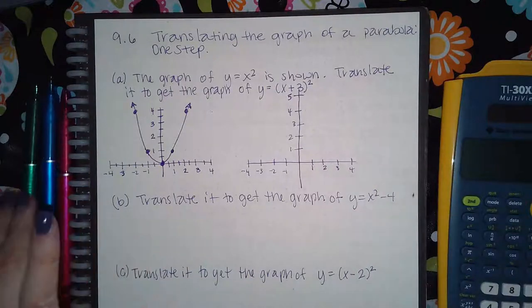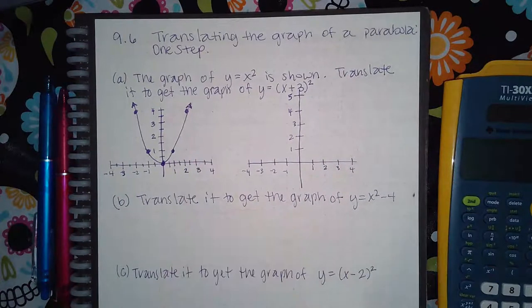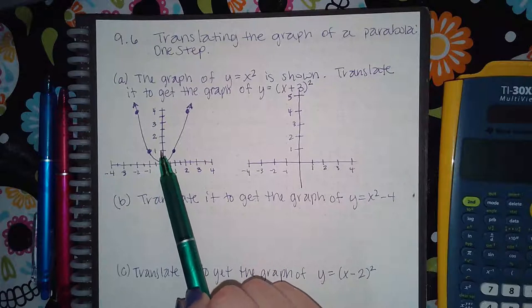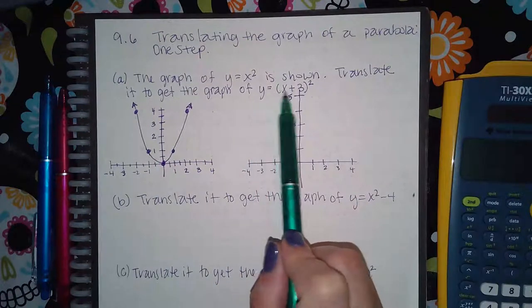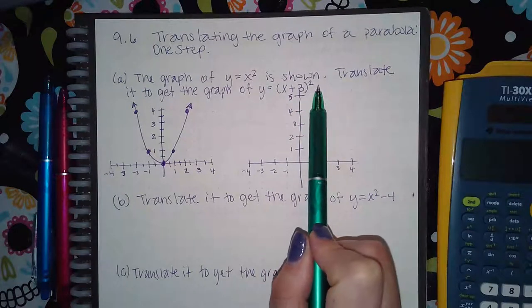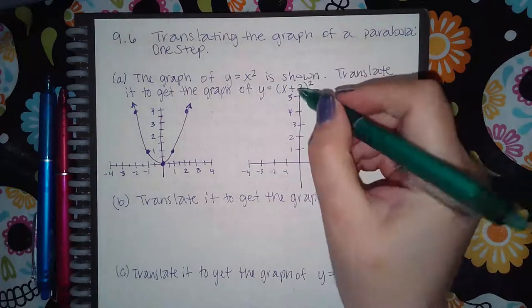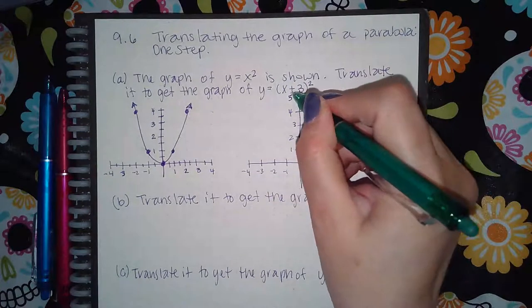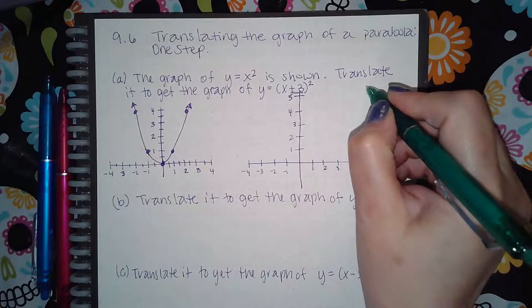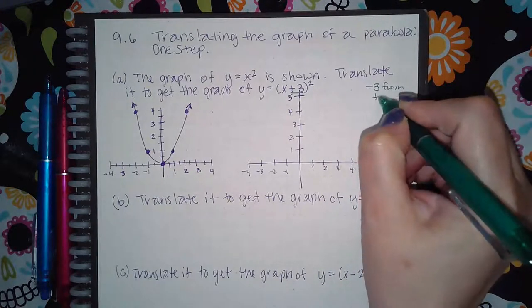Here we are at section 9.6, translating the graph of a parabola one step. It says the graph of y equals x squared is shown — translate it to get the graph of y equals (x plus 3) squared. We know that when we add three on the inside of the parentheses, that actually means you're going to subtract three from the x values.